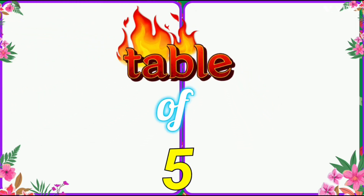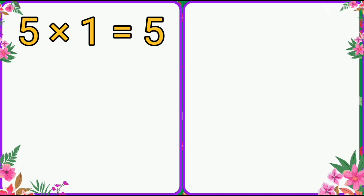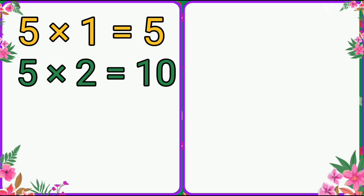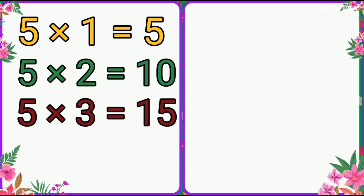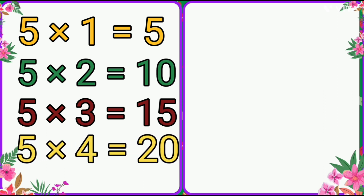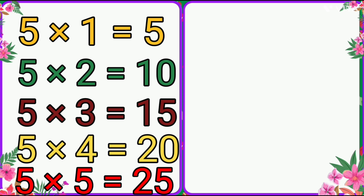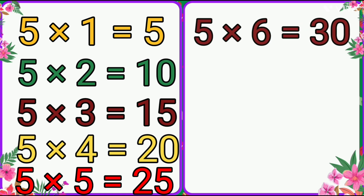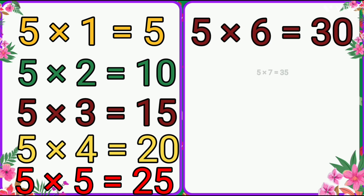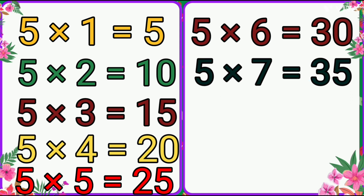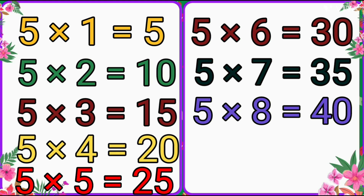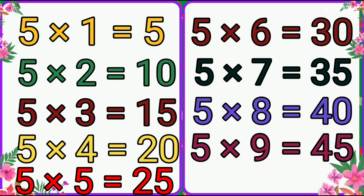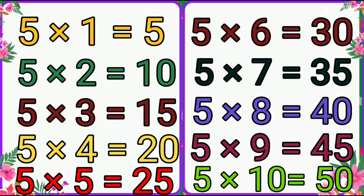Table of five. Five ones are five. Five twos are ten. Five threes are fifteen. Five fours are twenty. Five fives are twenty-five. Five sixes are thirty. Five sevens are thirty-five. Five eights are forty. Five nines are forty-five. Five tens are fifty.